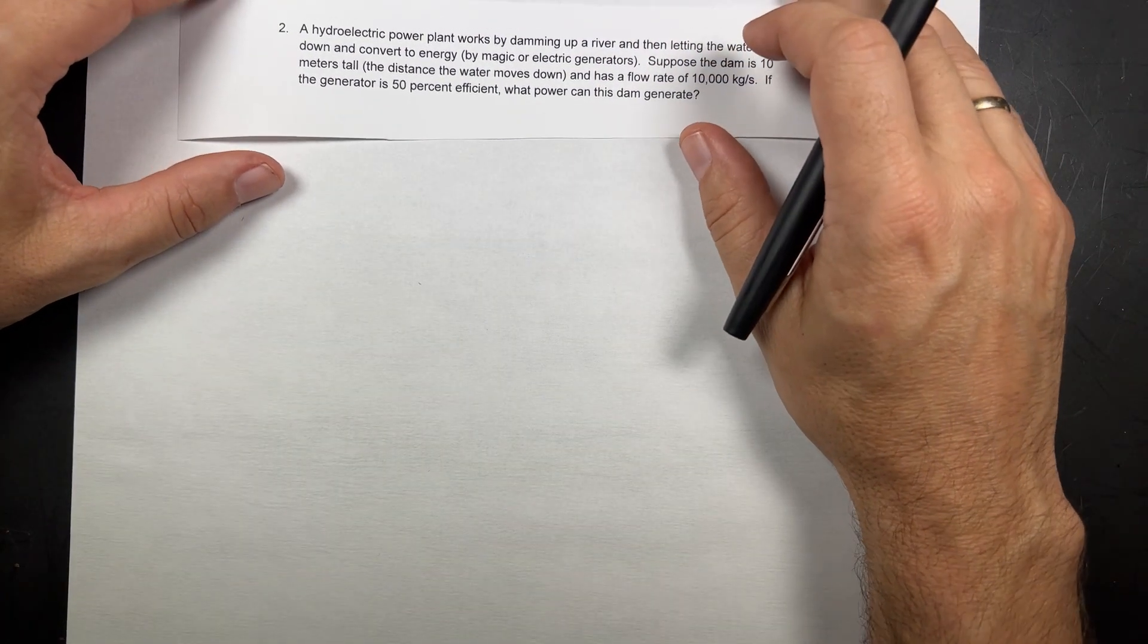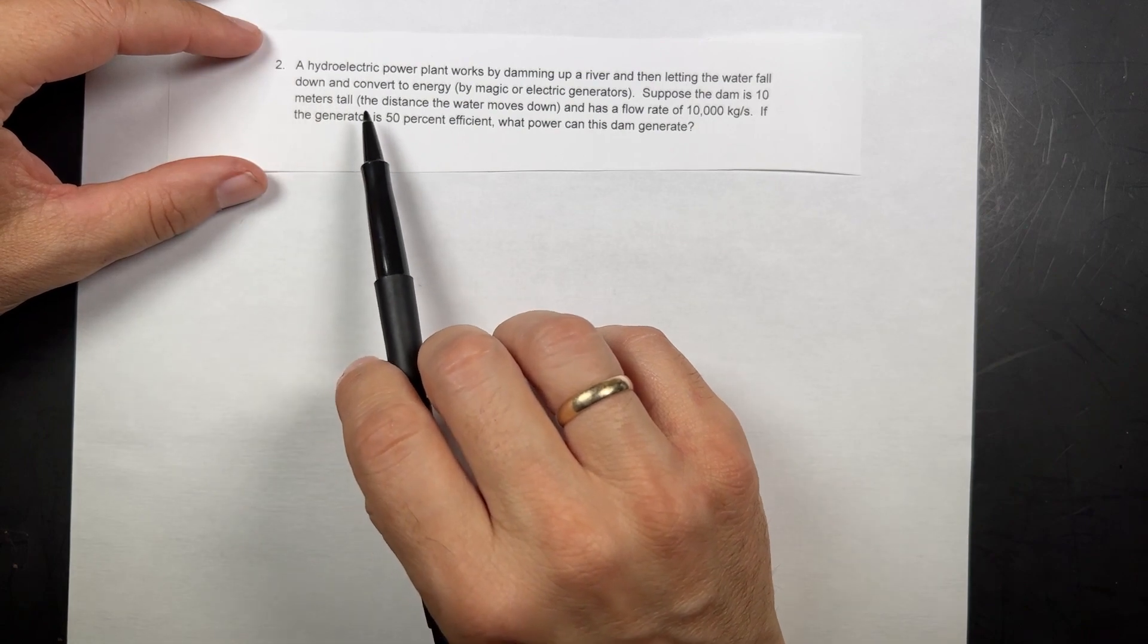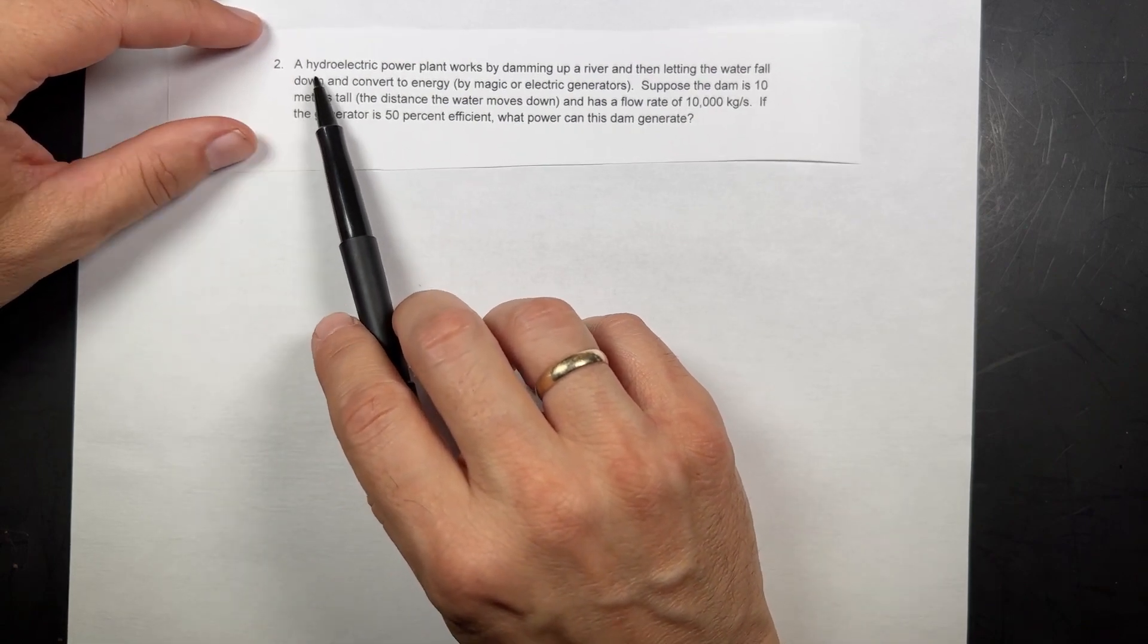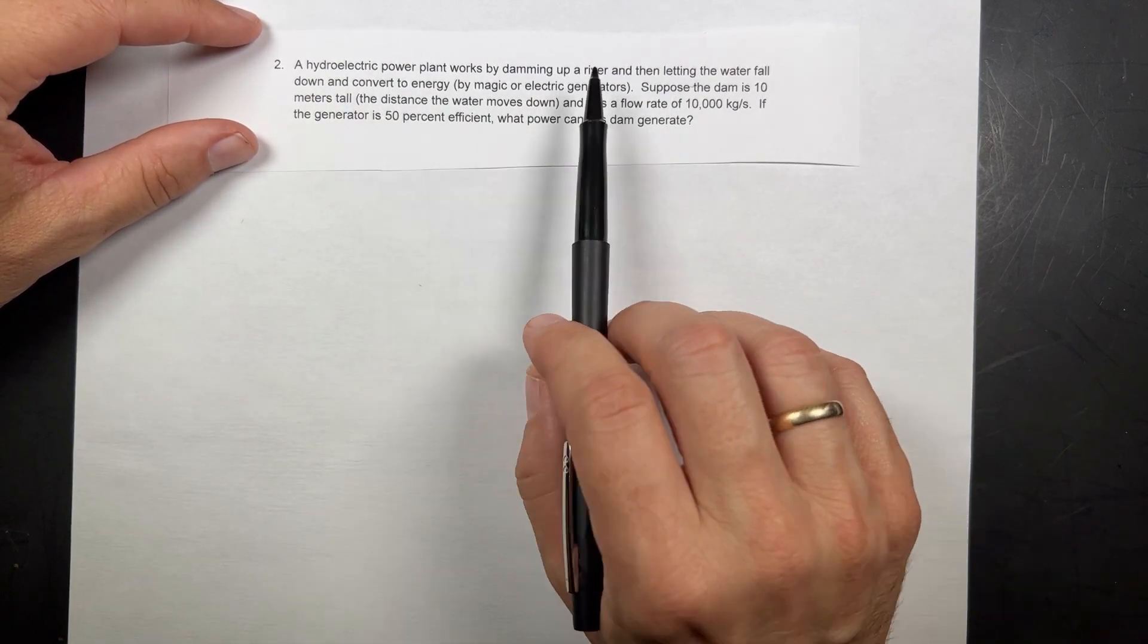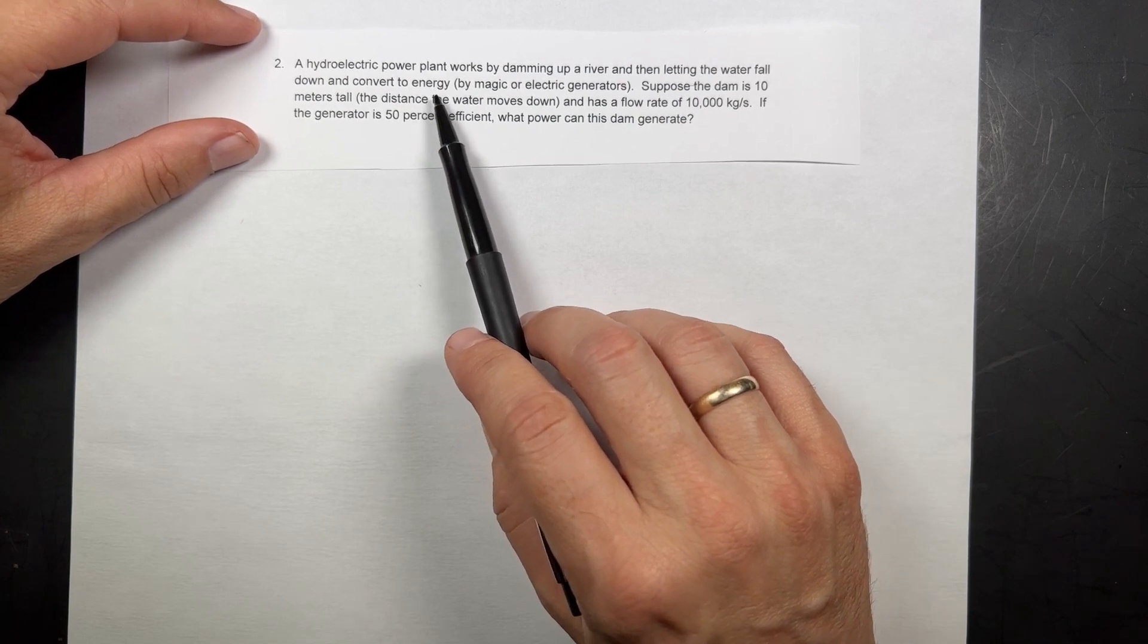Here is another practice work energy problem. This one is kind of small so I'm going to read it to you. I made this one up. A hydroelectric power plant works by damming up a river and then letting the water fall down and convert to energy. Well, convert to a different kind of electrical energy.